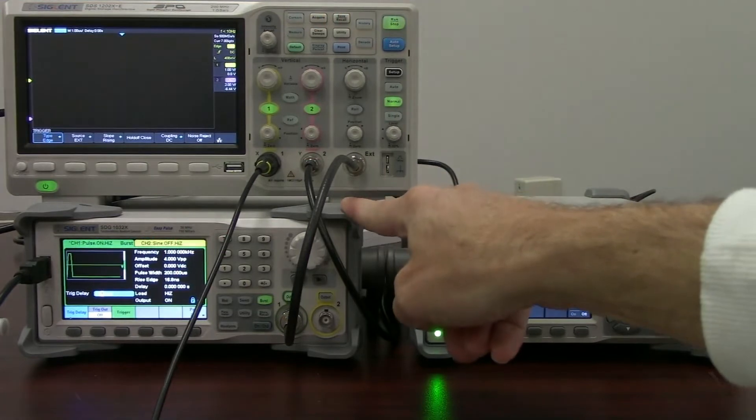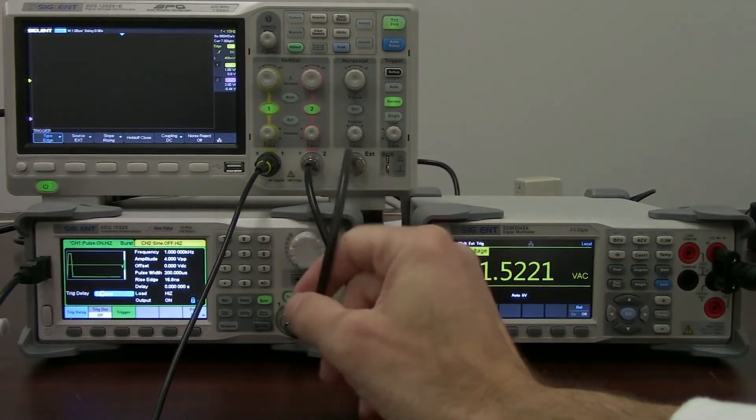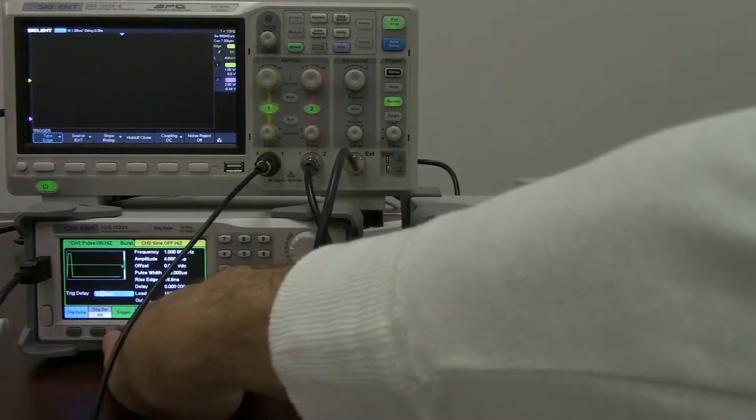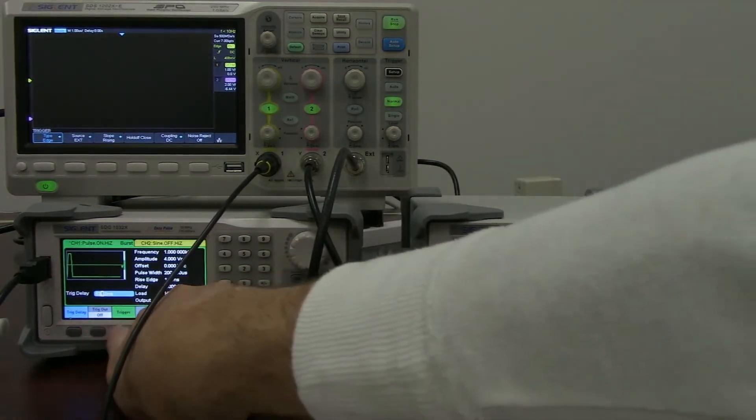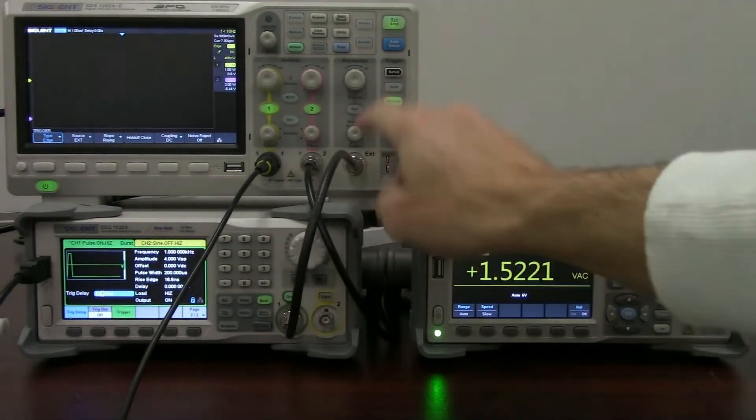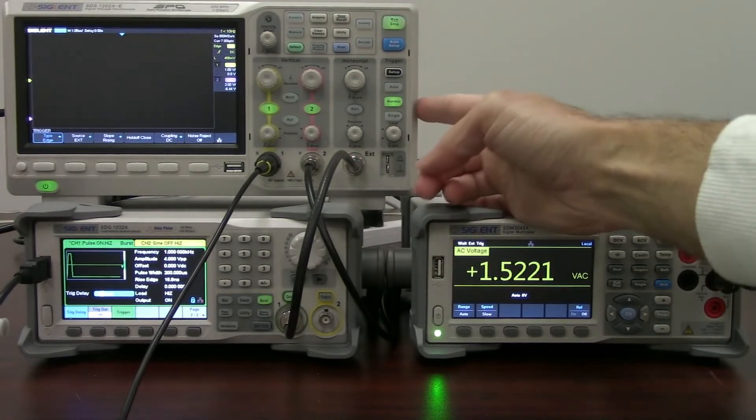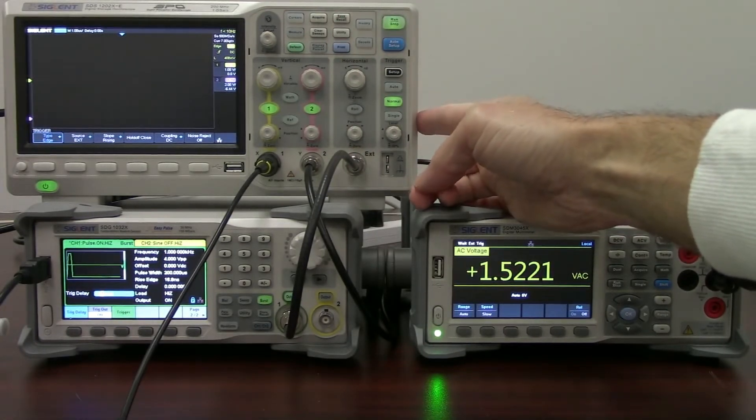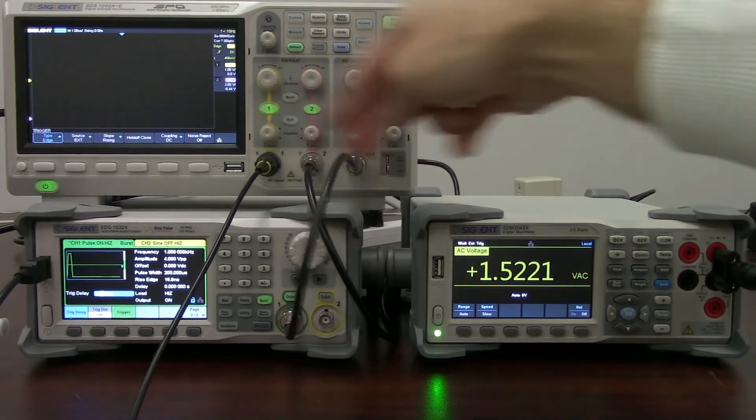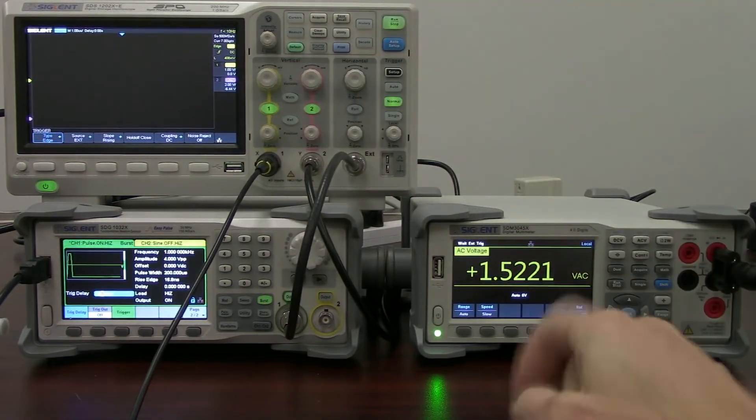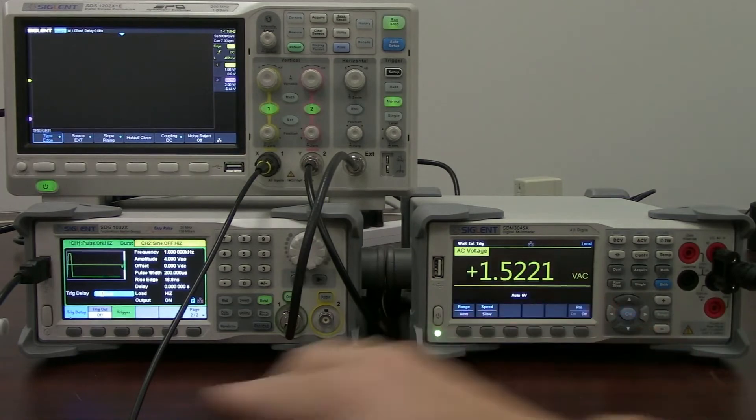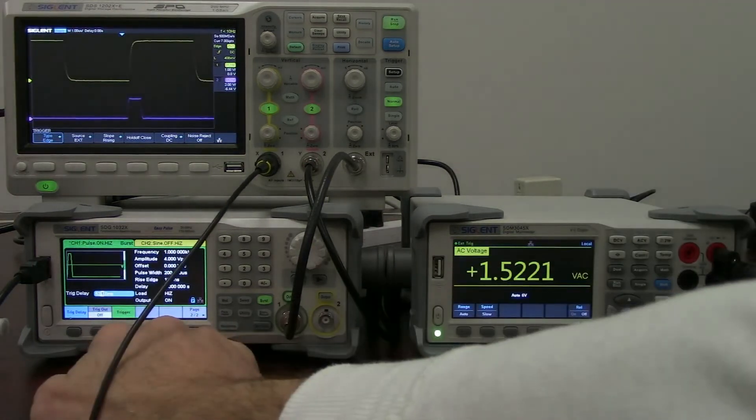I'm using the SDG1032X waveform generator simply to create that external burst. I'm going to manually control that by pressing this trigger button here. When I press the trigger button, a signal is going to go to the external trigger that's going to meet the particular trigger configuration that I have set for the oscilloscope. It's going to then measure these two channels on the scope as well as cause the update reading on the voltmeter.